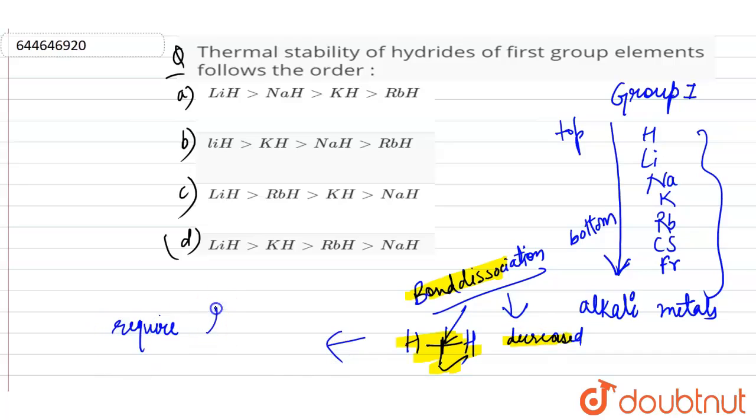It requires less energy to break the bond, hence they become less stable. If the bond dissociation energy is less, the bond is weak and can easily break, resulting in less stable molecules of the alkali metals.